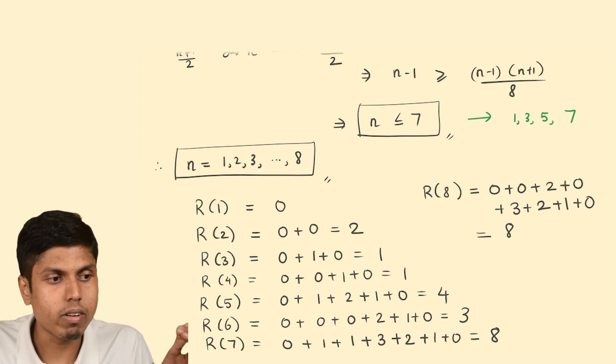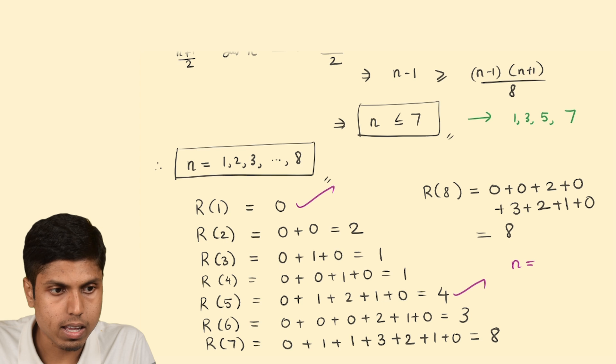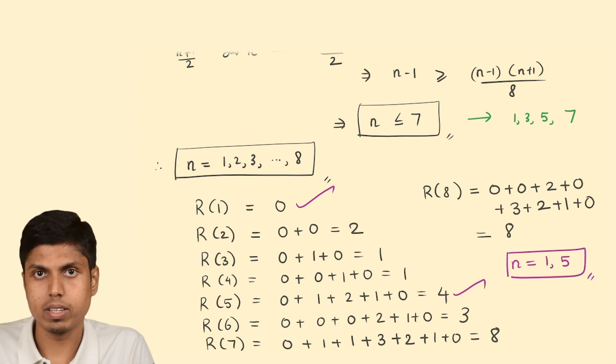What are the values for which R(n) equals n minus 1? Clearly, it's for 1 and 5. Thus, the answers are n equal to 1 and 5. Thank you.